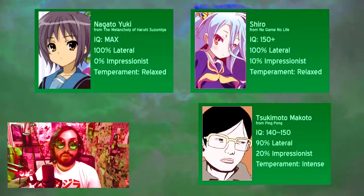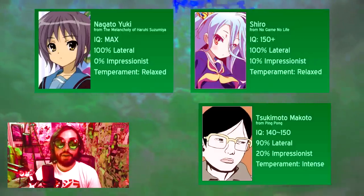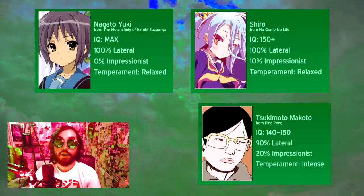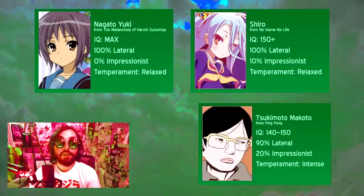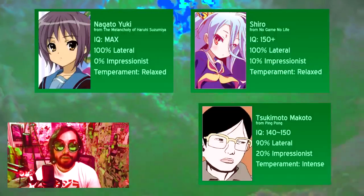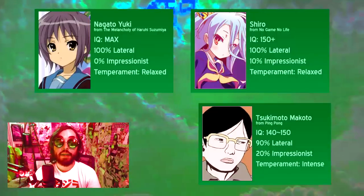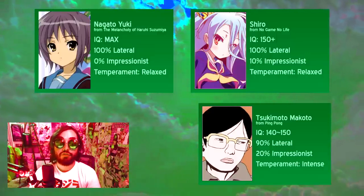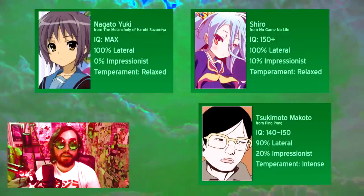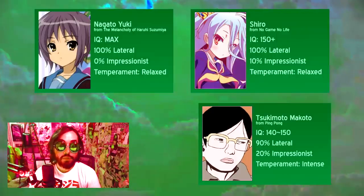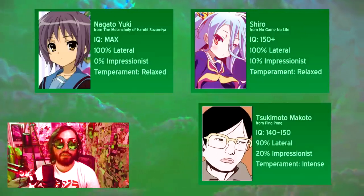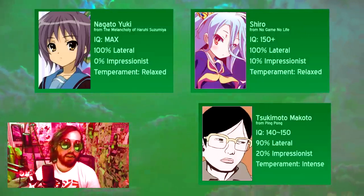It is very rare that these characters are portrayed as anything less than super geniuses, but Sosuke Sagara from Full Metal Panic gives us an idea of how this would manifest at a lower IQ. His hyper-lateral thinking allows him to make quick decisions on the battlefield, but his hyper-specific understanding of how to survive has little application in the daily life of a Japanese high schooler. Shiro from No Game No Life, Smile from Ping Pong, and Yuki Nagato from Haruhi Suzumiya are all unintentionally eccentric geniuses who can run through countless possibilities and choose just-right conclusions.